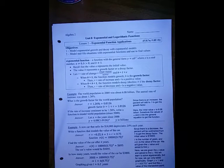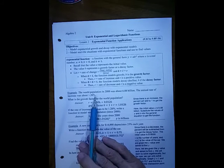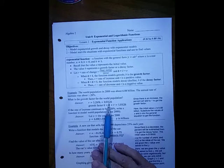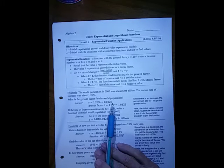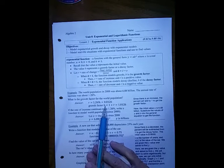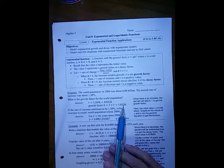In the first example, the world population in 2000 was about 6.08 billion. The annual rate of increase was about 1.26%. What is the growth factor for the world population? First, we take this rate and change it into a decimal, giving 0.0126. Then the growth factor b, because this is an increase, we add that to 1. So b is now 1.0126.